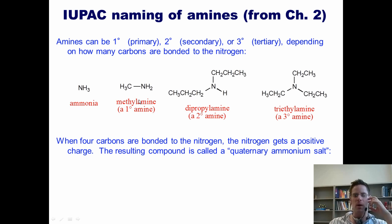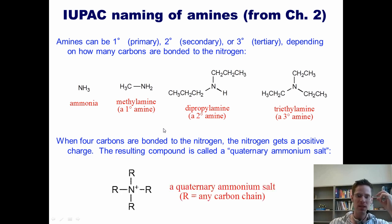When four carbons are bonded to the nitrogen, the nitrogen gets a positive charge. It's important to remember that that nitrogen still has a full octet. It only has a positive charge because it's sharing more electrons than nitrogen typically likes to. When you have a positively charged nitrogen, that is, a nitrogen that has four bonds, that compound is called a quaternary ammonium salt.